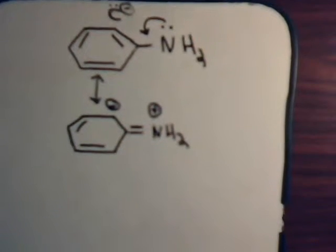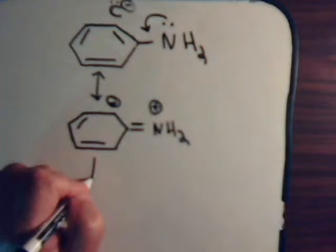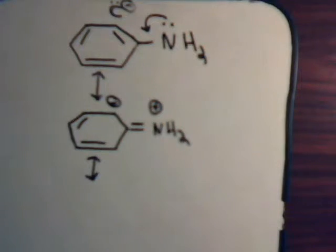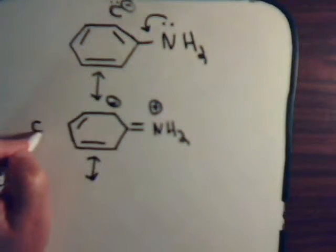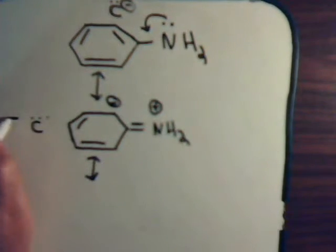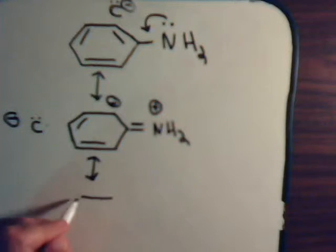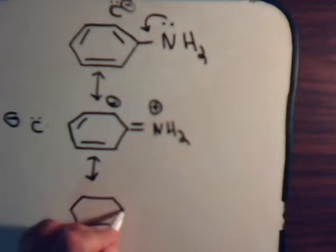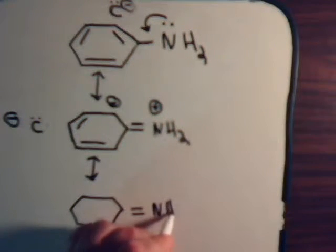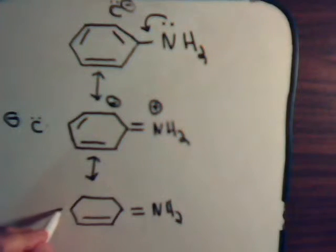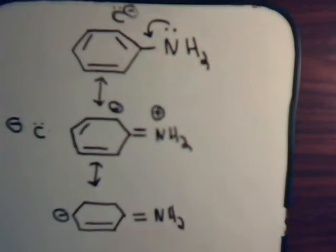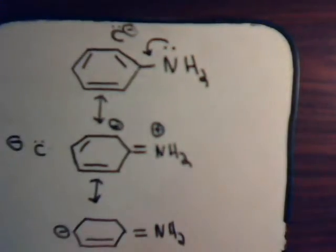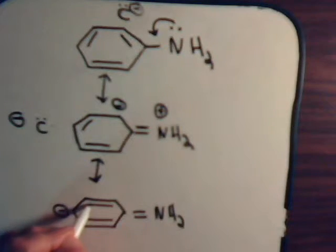And then to get the other canonical structure, we imagine here this carbon swipes the pi electron from this one. So it has a lone pair of pi electrons and it will have a negative charge.